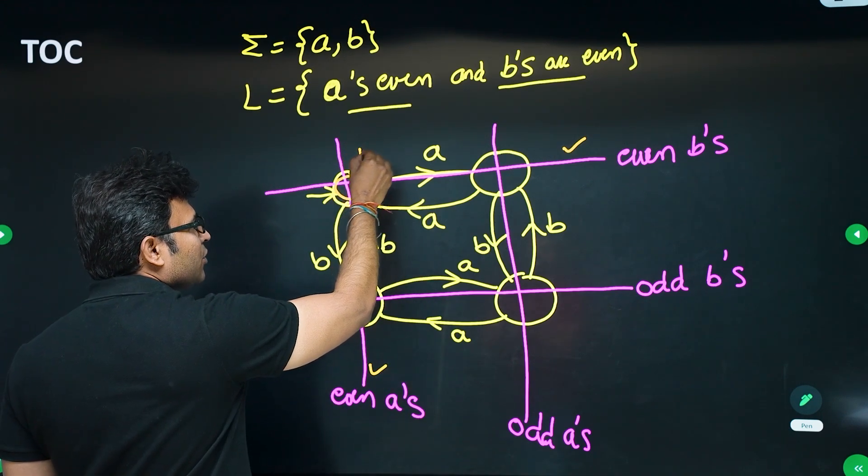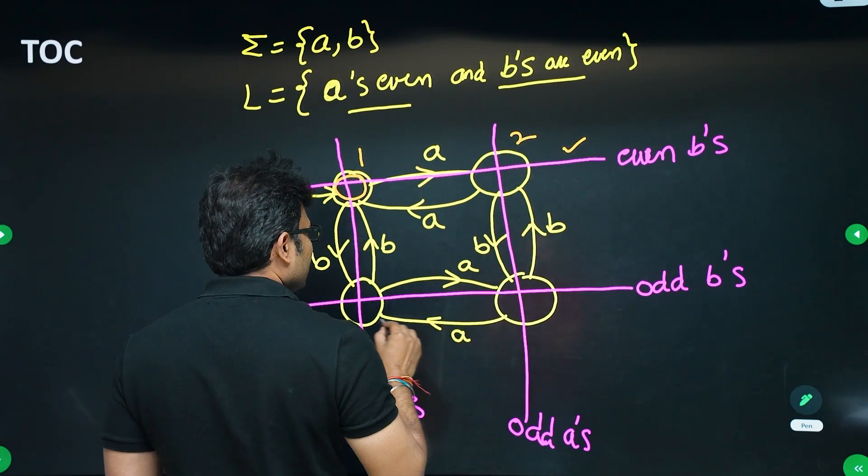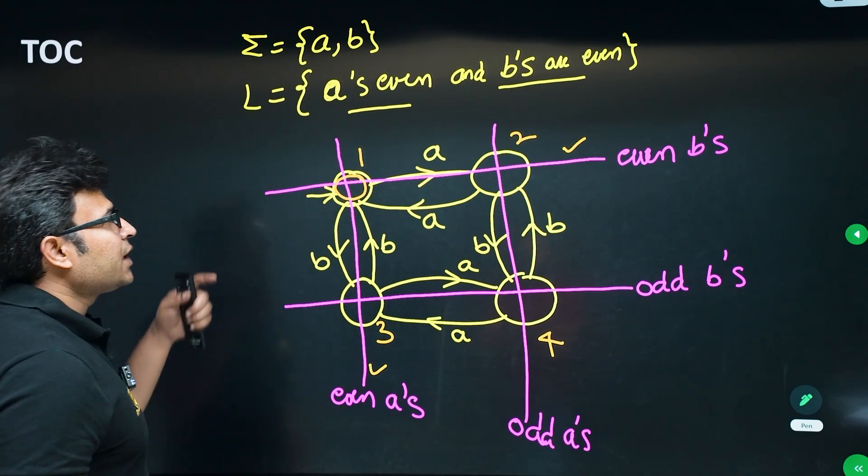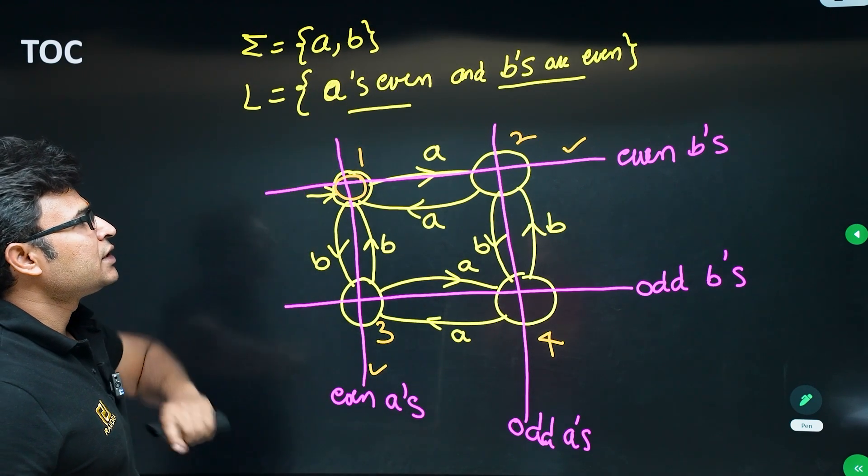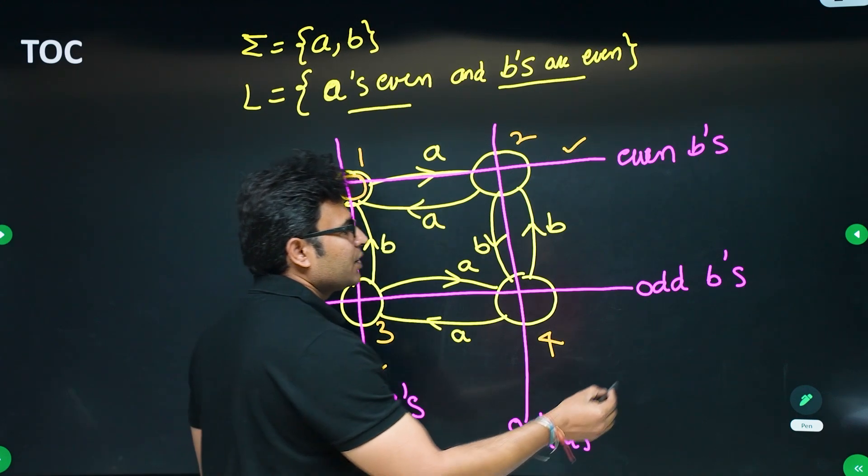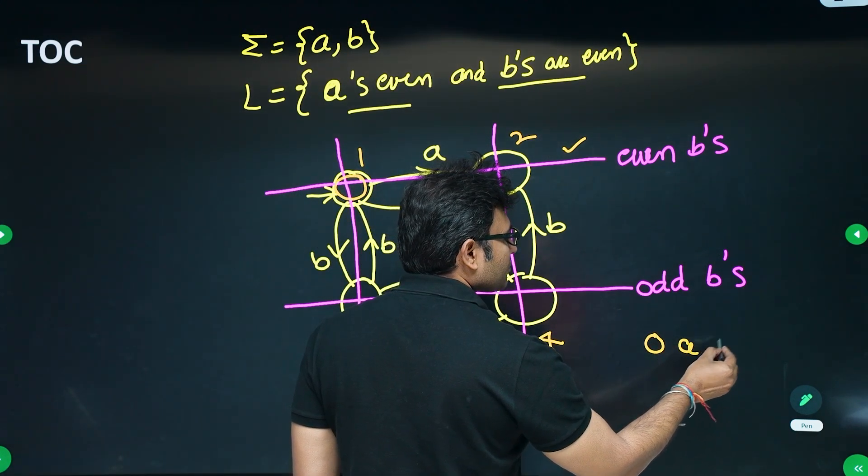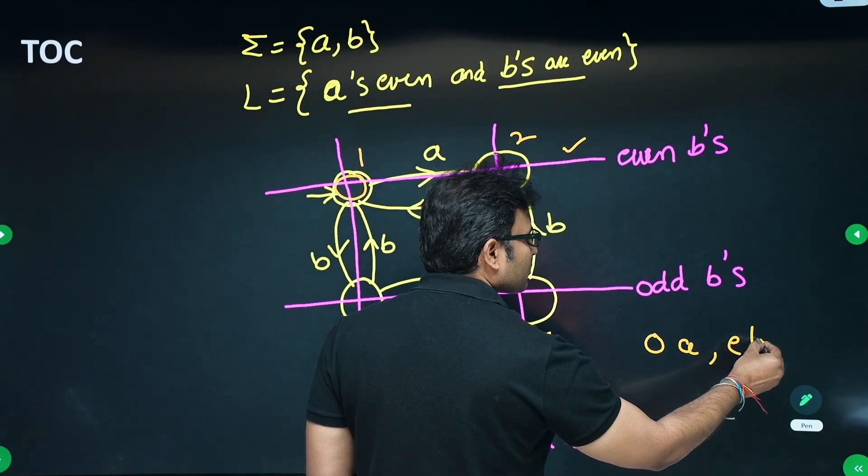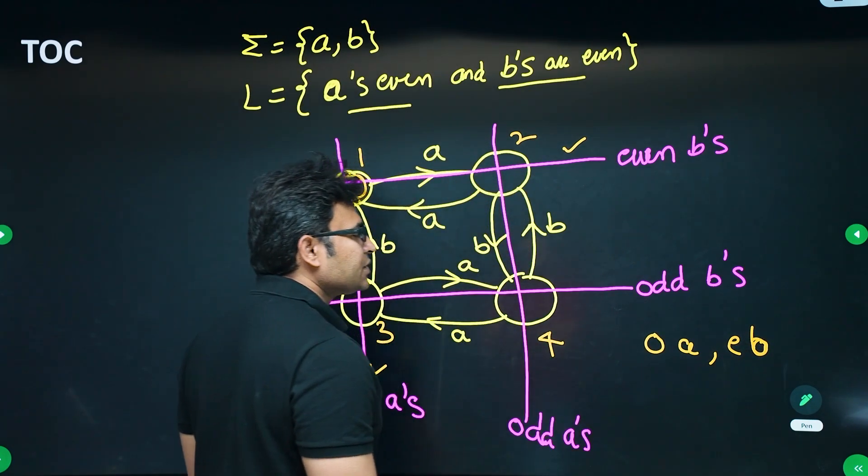Let me number the states. This is state number 1, state number 2, state number 3, state number 4. Now in the exam, instead of asking even number of a's and even number of b's, let's say they have asked for odd number of a's and even number of b's.